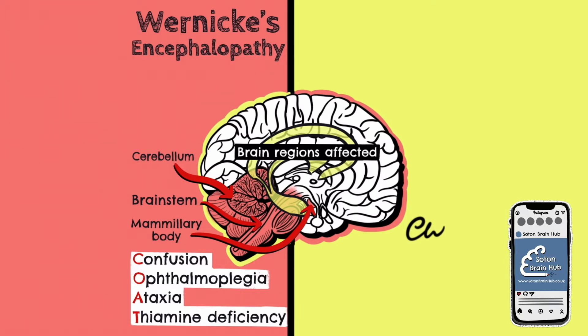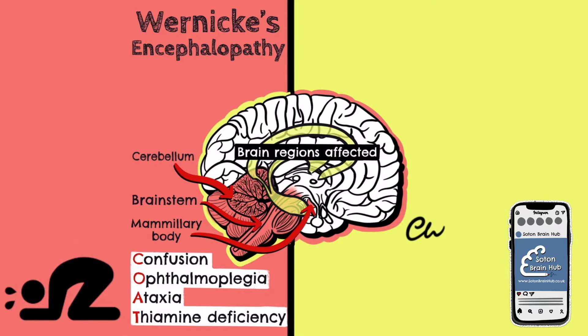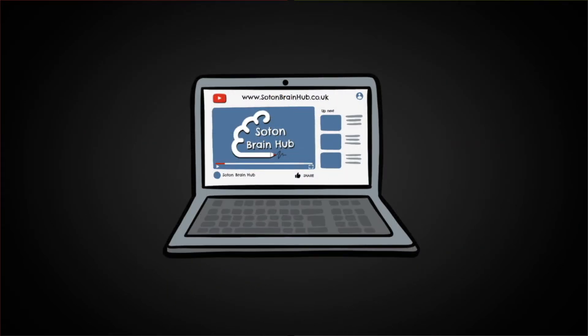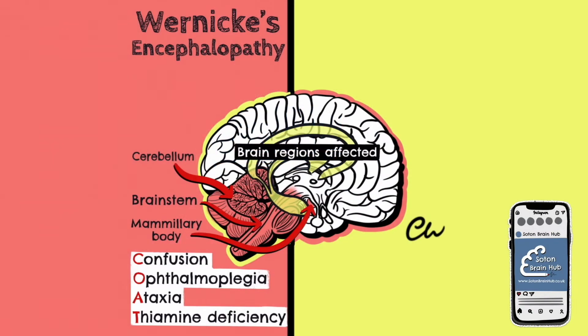Due to the thiamine deficiency, those with Wernicke's encephalopathy will experience B1 deficiency-related symptoms, which include loss of appetite, fatigue, and irritability. Treatment mostly involves identifying the underlying cause and supplementing the diet with thiamine. To remember these symptoms, you can use the mnemonic COAT: C-O-A-T.